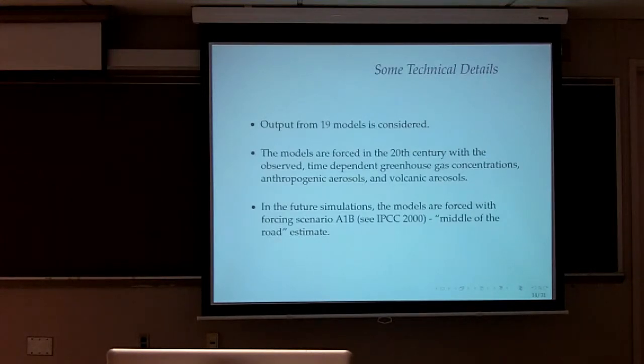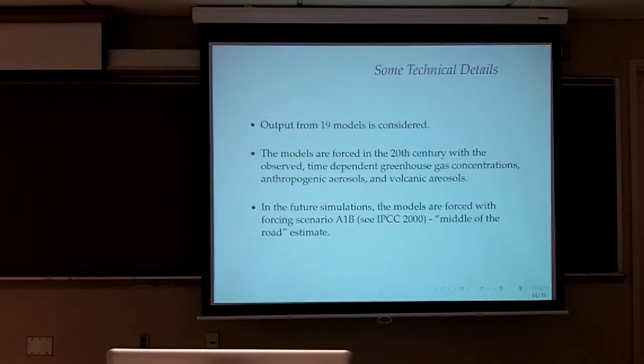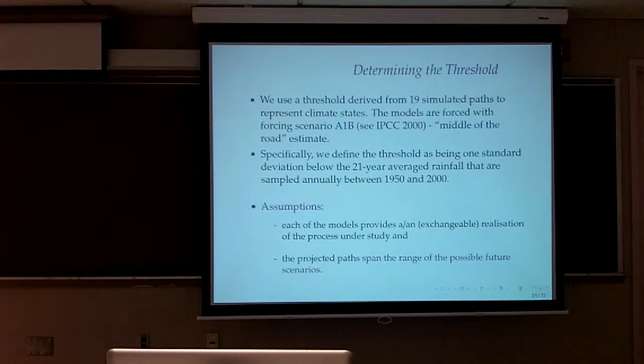In this study we had 19 models that were used to predict the drought, the amount of water that came up in both the Southwest and in the Mediterranean. These are some of the specifications. The models are forced in the 20th century with observed independent greenhouse gas concentrations, anthropogenic aerosols and volcanic aerosols. In the future simulations, the models are forced with forcing scenario A1B, middle of the road estimate.